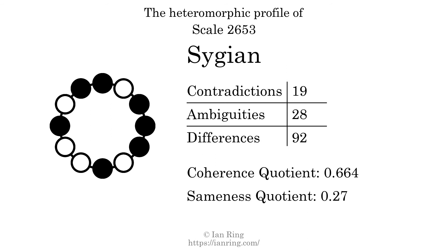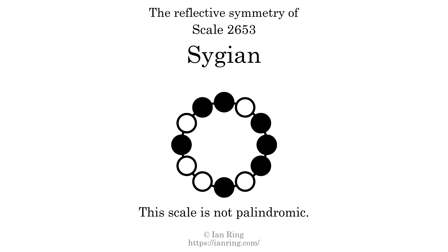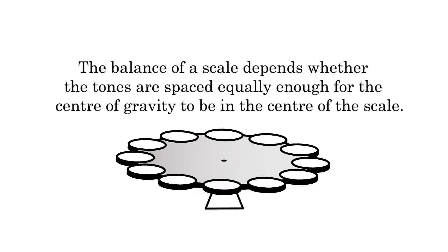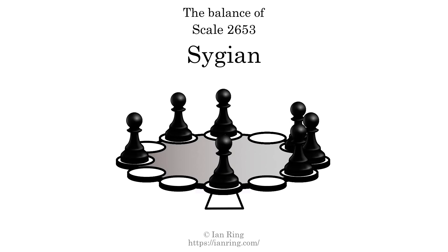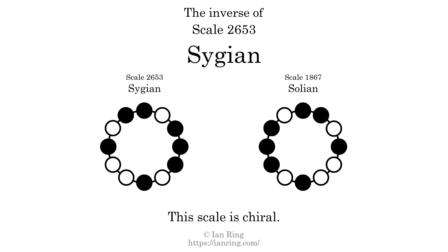This scale has no reflective symmetry. This scale has a different pattern of intervals ascending and descending, so it is not palindromic. This scale has no ridge tones. The balance of a scale depends on whether the tones are spaced equally enough for the center of gravity to be in the center of the scale. This scale is not balanced. The inverse of a scale is a mirror image — it is what you get when the sequence of intervals is reversed. The inverse of this scale is scale 1867, also known as Solian. This scale is chiral; it cannot transform into its inverse by rotational transformation. This scale has no rotational symmetry.